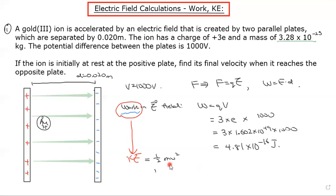So that means half times 3.28 times 10 to the negative 25 times v squared equals 4.81 times 10 to the negative 16, and then you basically solve for v squared. So that should be 4.81 times 10 to the negative 16 times 2 divided by 3.28 times 10 to the negative 25.